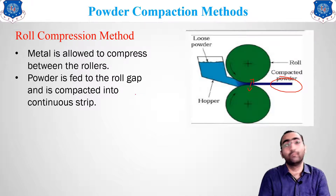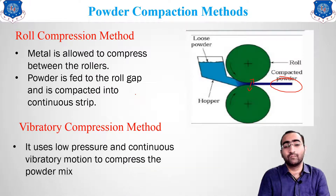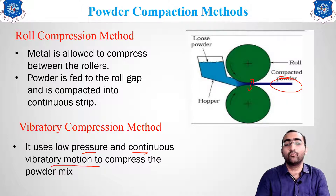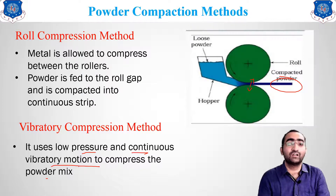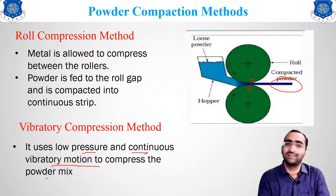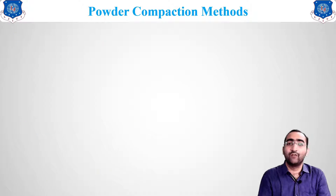The third method is vibratory compression. It uses low pressure and continuous vibratory motion to compress the powder, similar to die compression. The vibration during filling ensures voids are minimized and density is increased, which improves the strength of the material.